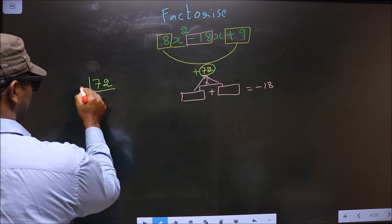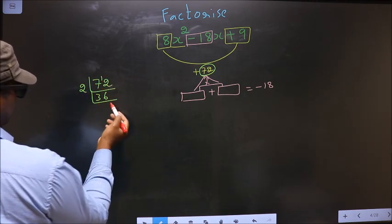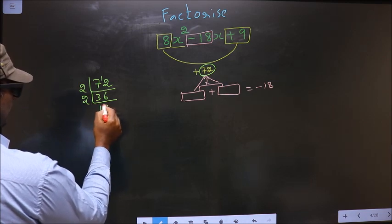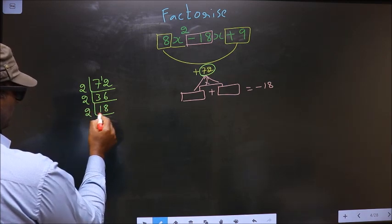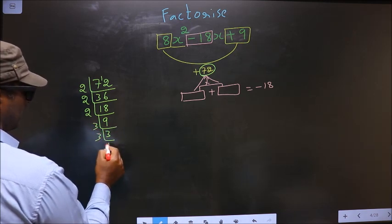So I start with 2. 2, 3, 6. Then 2, 6, 12. Again 2: 1 and 8. Again 2: 9. Now 3: 3. Then 3 and 1.